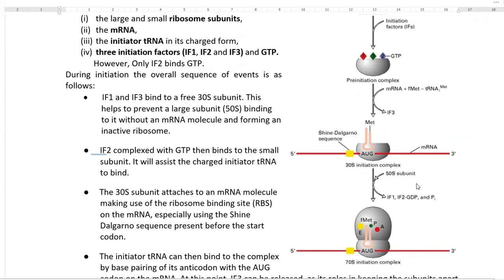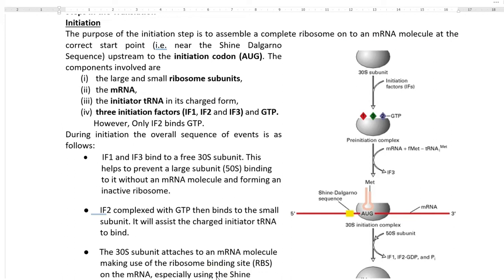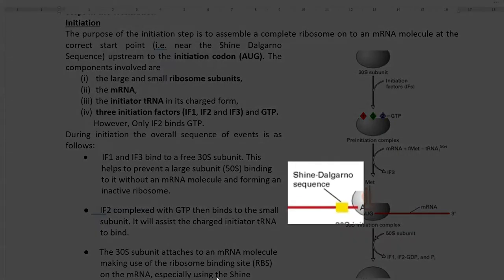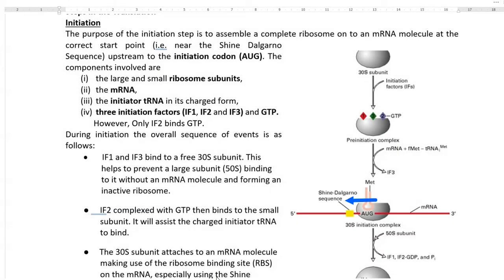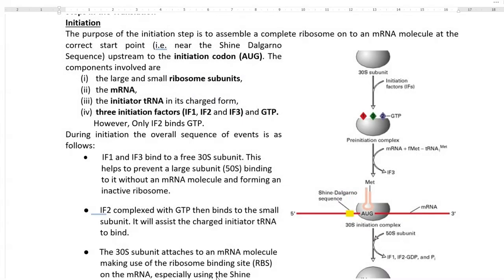The main purpose of the initiation step of translation is to assemble a complete ribosome on the mRNA molecule in order to initiate the protein synthesis process. This ribosome needs to be assembled on a correct start site — a site nearer to the Shine-Dalgarno sequence, which is upstream to the initiation codon. The initiation codon AUG is the one that starts the translation process, and the ribosome will bind near the Shine-Dalgarno sequence region.